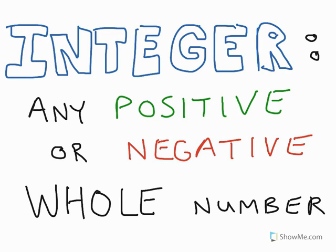So to review, an integer is any positive or negative whole number. And when we compare integers, we quite often use a number line to show which ones are further to the right and which ones are greater than the others.